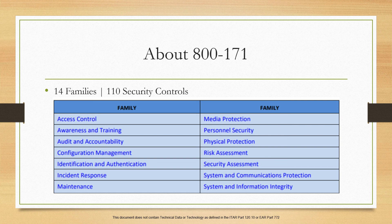Physical protection is about who has access to the systems, equipment, and storage environments — this accounts for six controls. Personnel security is all about how employees are screened prior to granting them access, such as background checks, and that accounts for two controls.